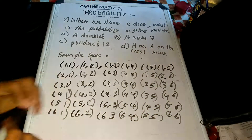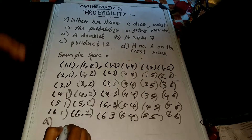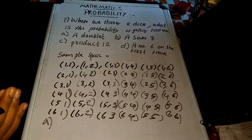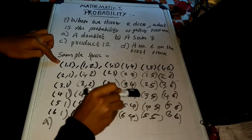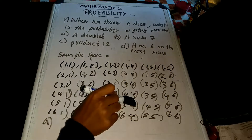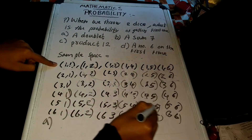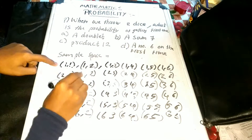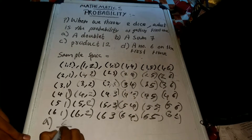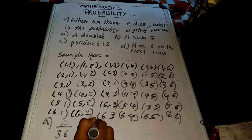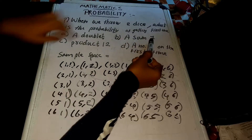For doublets: we want pairs where both dice show the same number. So the doublets are 1,1; 2,2; 3,3; 4,4; 5,5; 6,6. That gives us 6 favorable outcomes out of 36 total, so 6 by 36, which equals approximately 0.166. That is the answer to the first question.